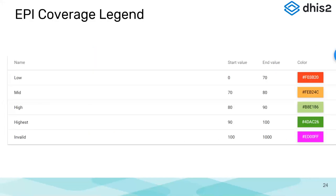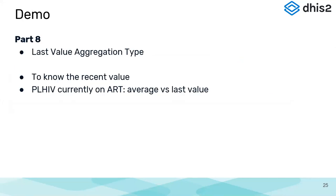The next part will be about the aggregation type - that is also an option which we kept for the last session. We will see how to use the 'last value' aggregation type in our data. This is one of the aggregation types which we can configure in the system or use within pivot tables.